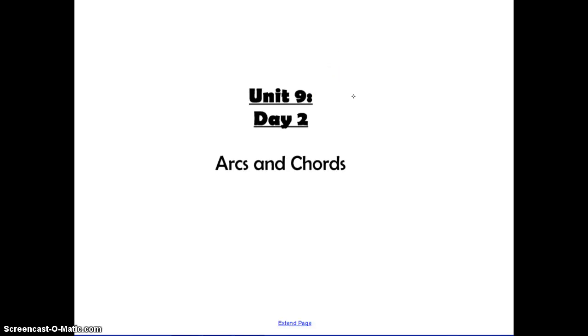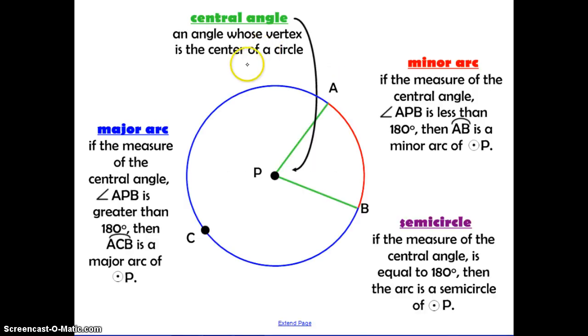Unit 9, Day 2, Arcs and Chords. Let's define a few terms first. A central angle is an angle whose vertex is at the center of the circle. So here we have this point P, the center of the circle, and this green angle is formed.